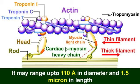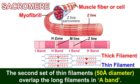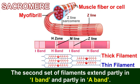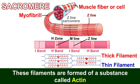The second set of thin filaments, 50 angstrom in diameter, overlaps the long filaments in the A band. These filaments extend partly in the I band and partly in the A band, and are formed of a substance called actin.